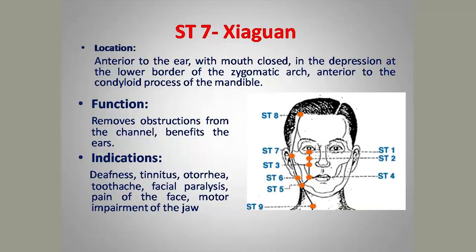Stomach 7, Xiaguan, is located in front of the ear and can be located by closing the mouth — a depression is formed at the lower border of the zygomatic arch, anterior to the condylar process of the mandible. Its important function is in treating deafness, removing excess wind, and treating ear problems. Specific indications are tinnitus, otorrhea (discharges from the ear), toothache, facial paralysis, and motor dysfunction of the jaw.